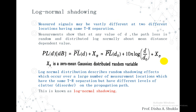For log normal shadowing: measured signals can be vastly different at two different locations having the same transmitter-receiver separation. Measurements show that at any value of distance d, the path loss is random and distributed log normally about the mean distance-dependent value. The log normal distribution describes the random shadowing effect which occurs over a large number of measurement locations that have the same transmitter-receiver separation but have different levels of clutter on the propagation path.